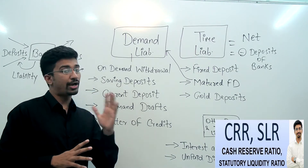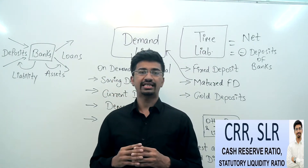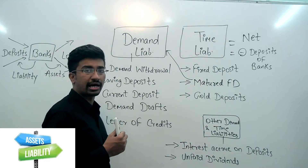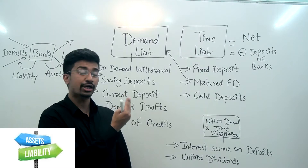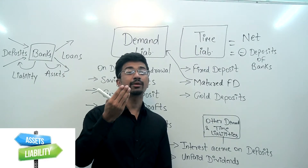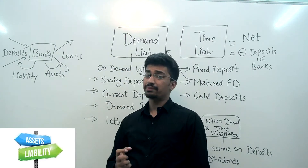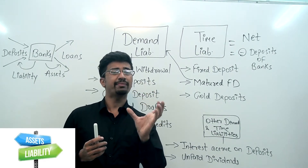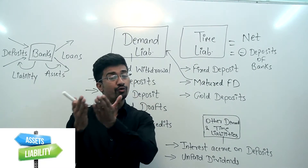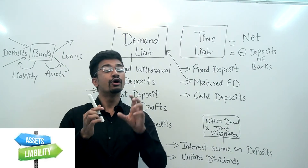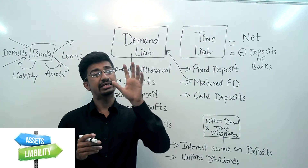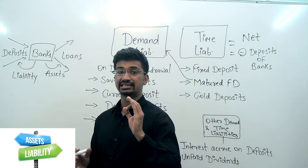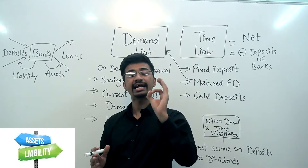दोस्तों, हमने वहाँ पर जो word use किया था वो था 'liability'. Liability का मतलब — एक होता है आपका asset जो आपका खुद का है, और एक होती है liability जो आपकी जिम्मेदारी है। Banking, financial या economic terms में — जो आपको देना है, जो आपके ऊपर debt है। CRR और SLR के through RBI अपनी monetary policies से liquidity को कम-ज़्यादा करके inflation को control करती है और growth पर effect डालती है।